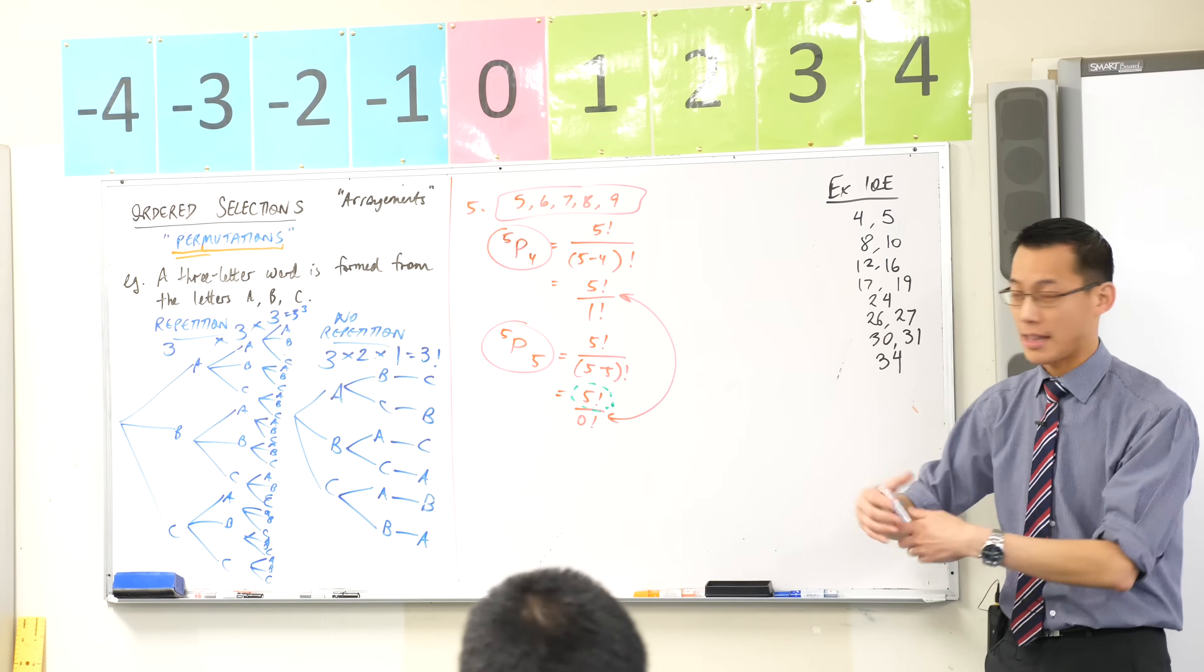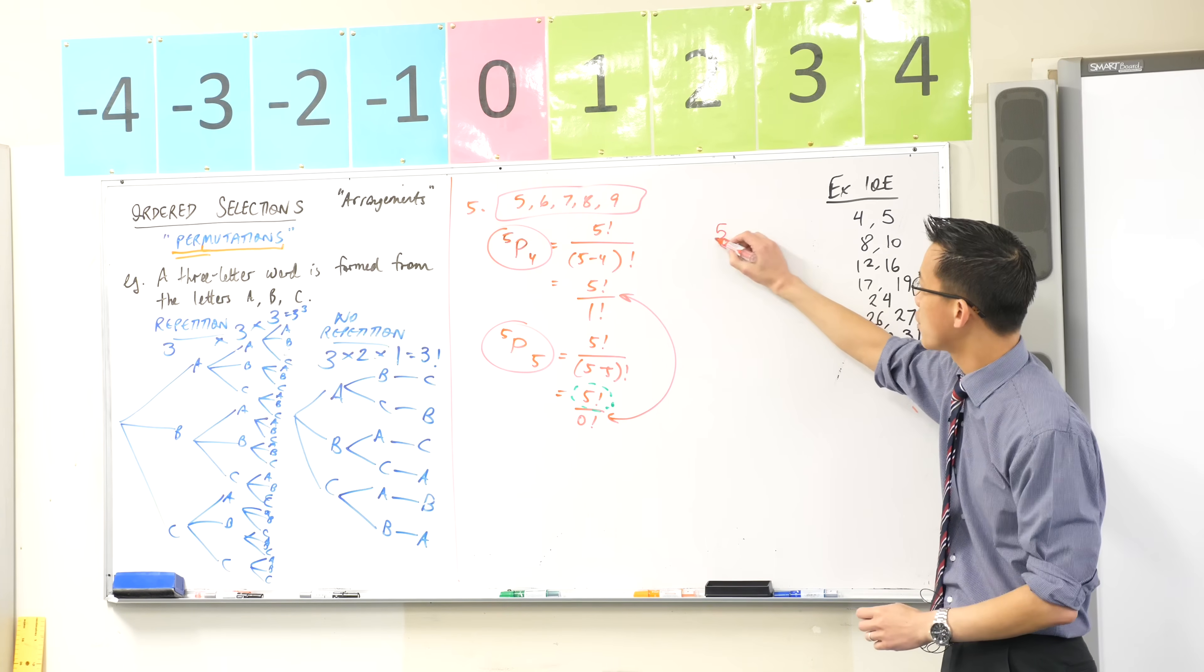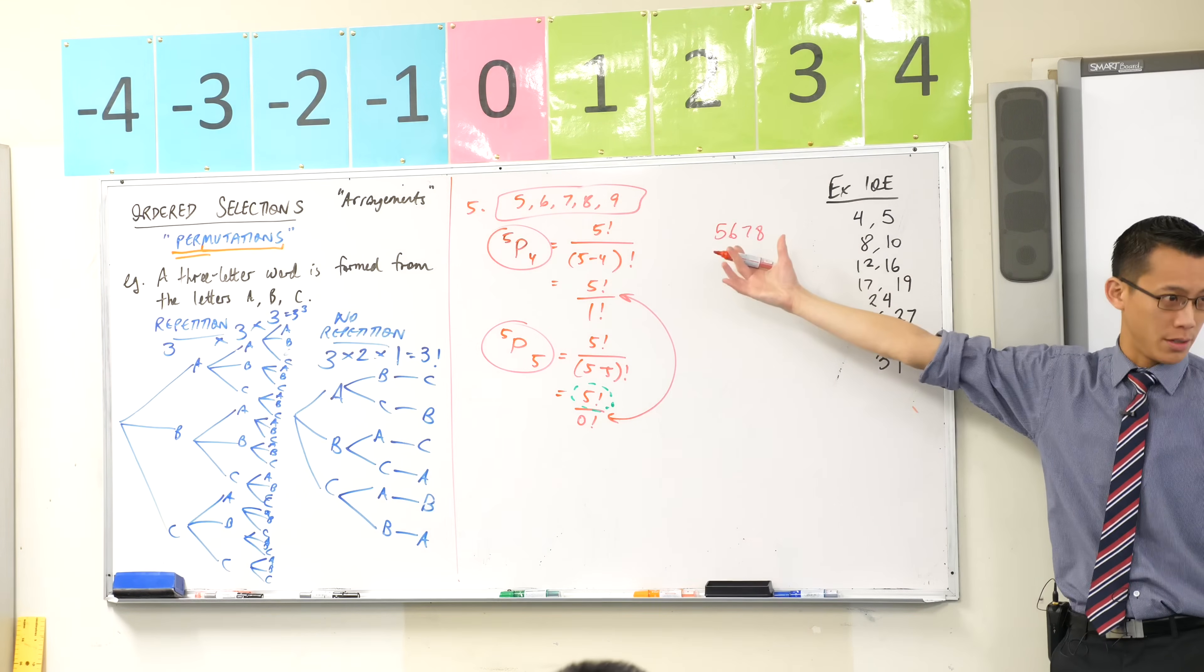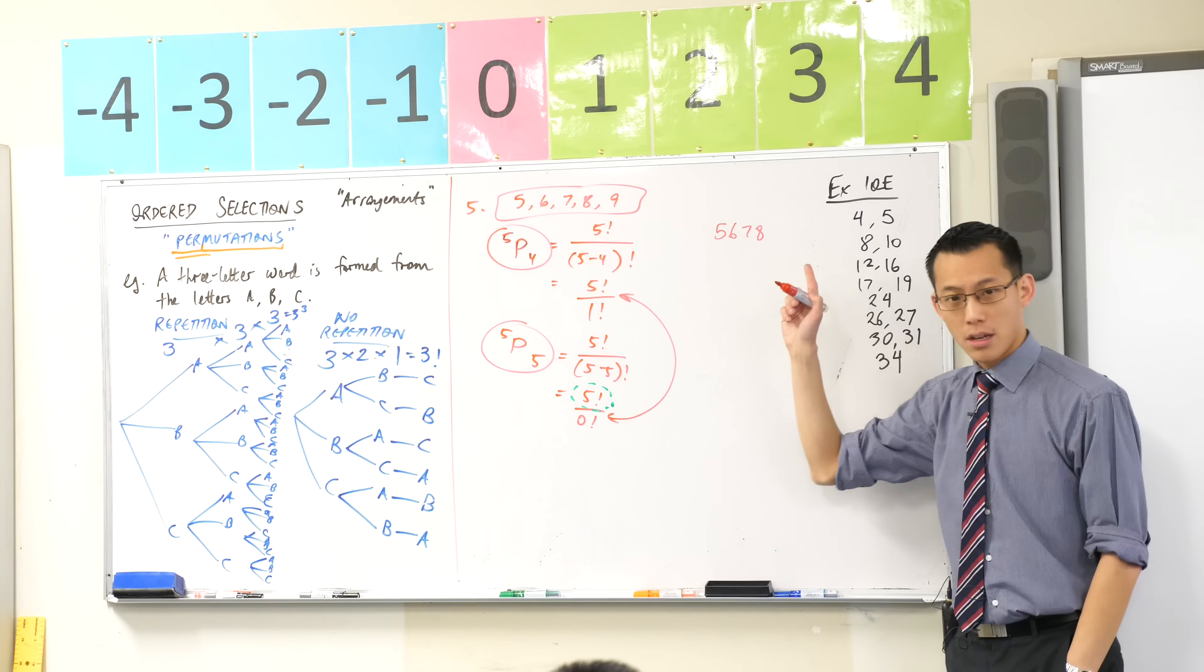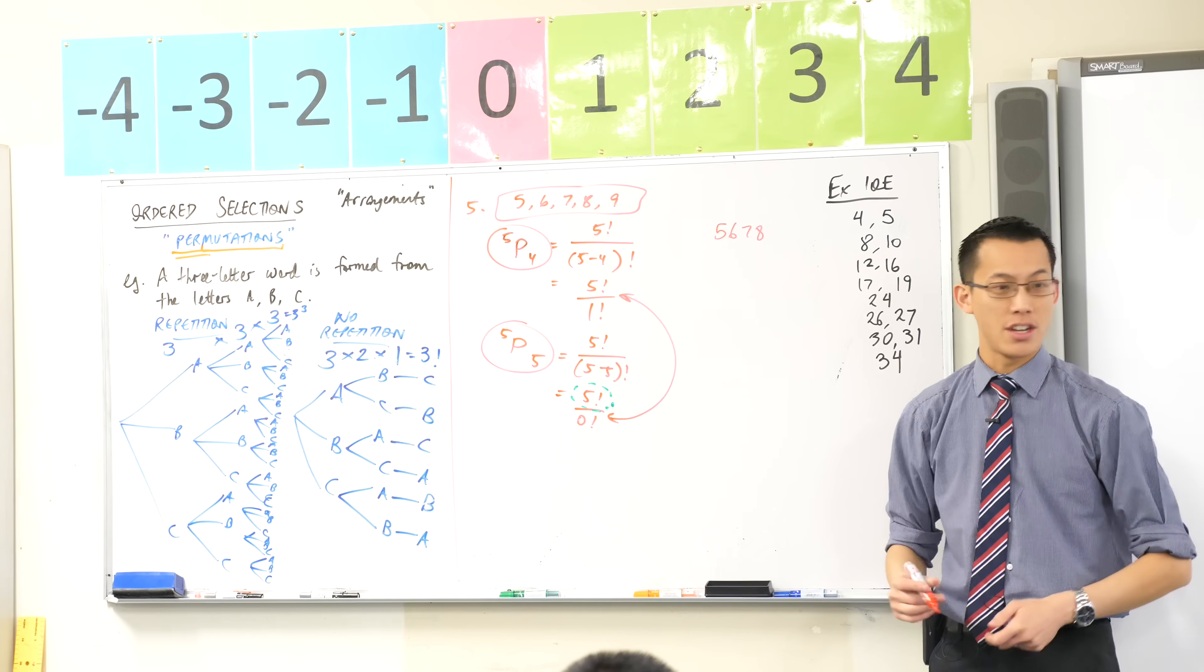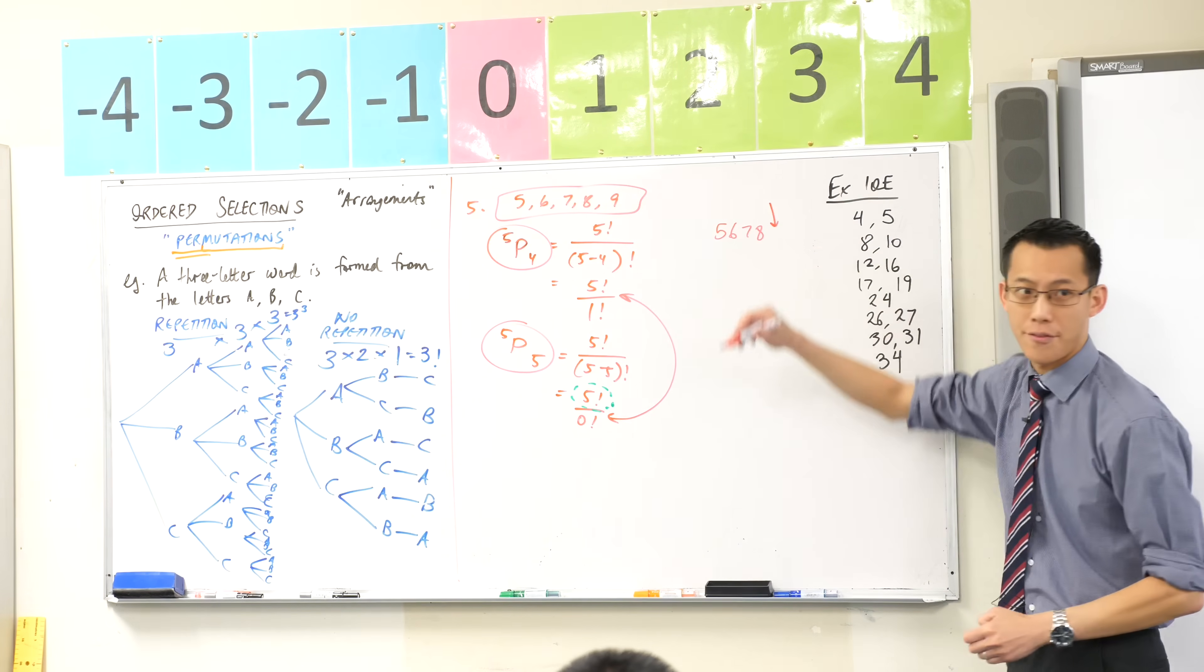5P4, you're picking out of the digits, and you're making a four-digit number. So, for example, you might choose the numbers 5, 6, 7, and 8. So here is one of the choices, one of the permutations. If I now change this situation and say, now I'm interested in five-digit numbers, how many choices do I have for this last number?